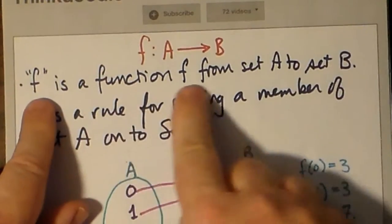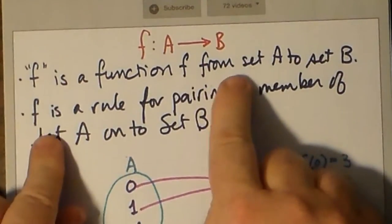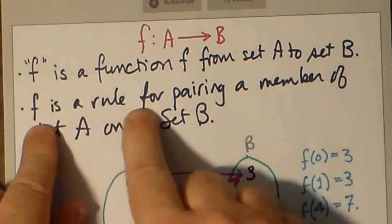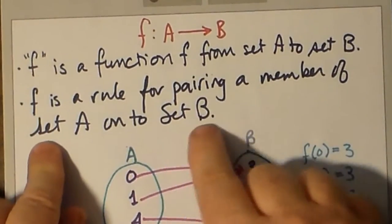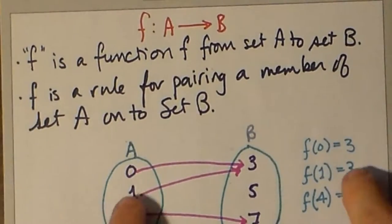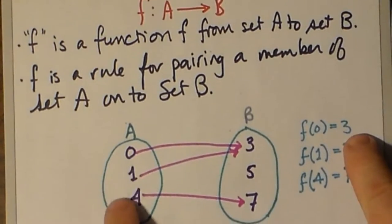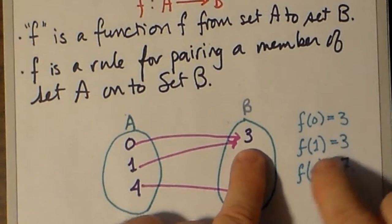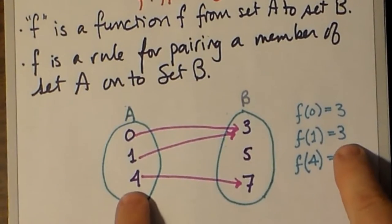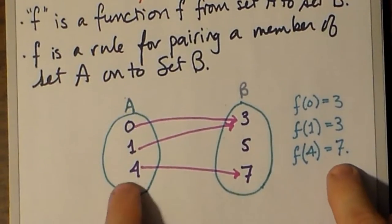We're saying that a rule f is used to map a member of set A onto a member of set B. We mean all members of set A onto some members of set B, where A and B are sets of numbers. This means there's a rule f which assigns to each element of a set A some element in set B.